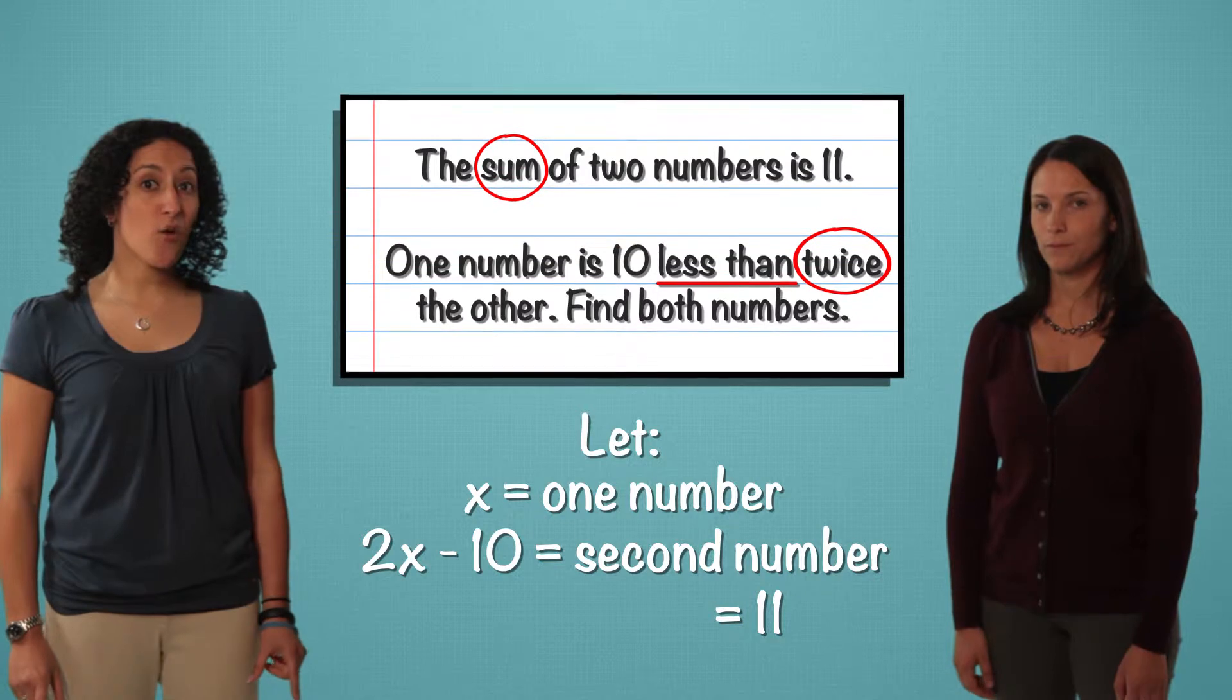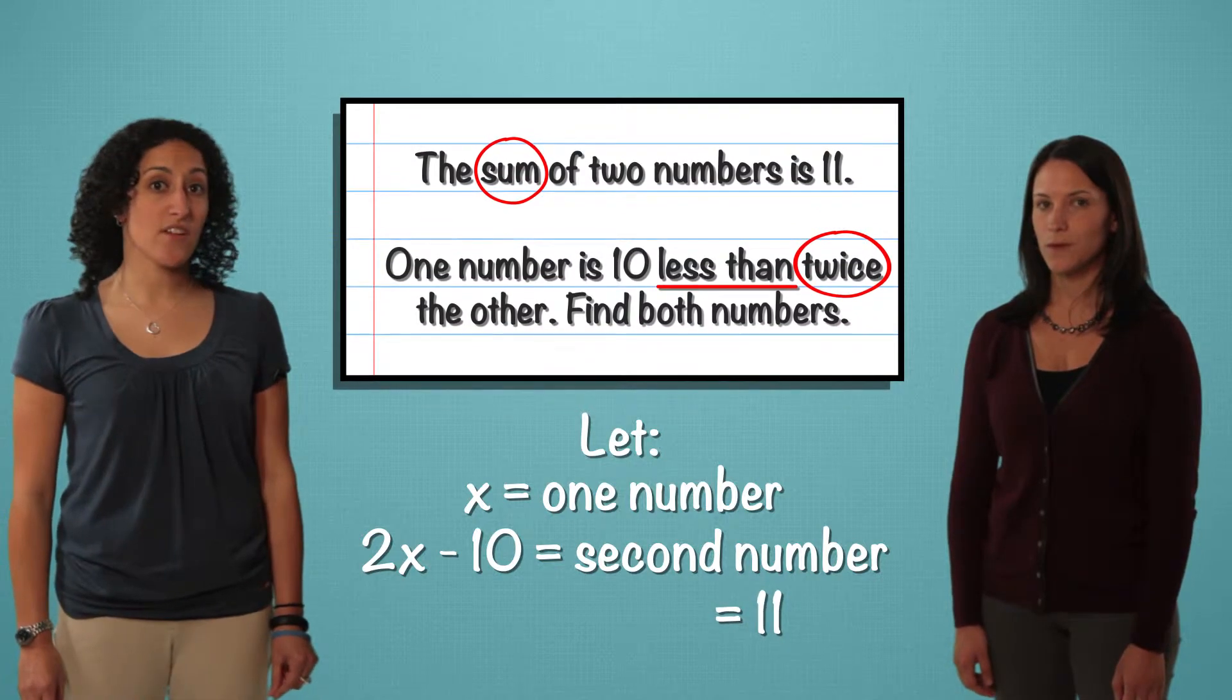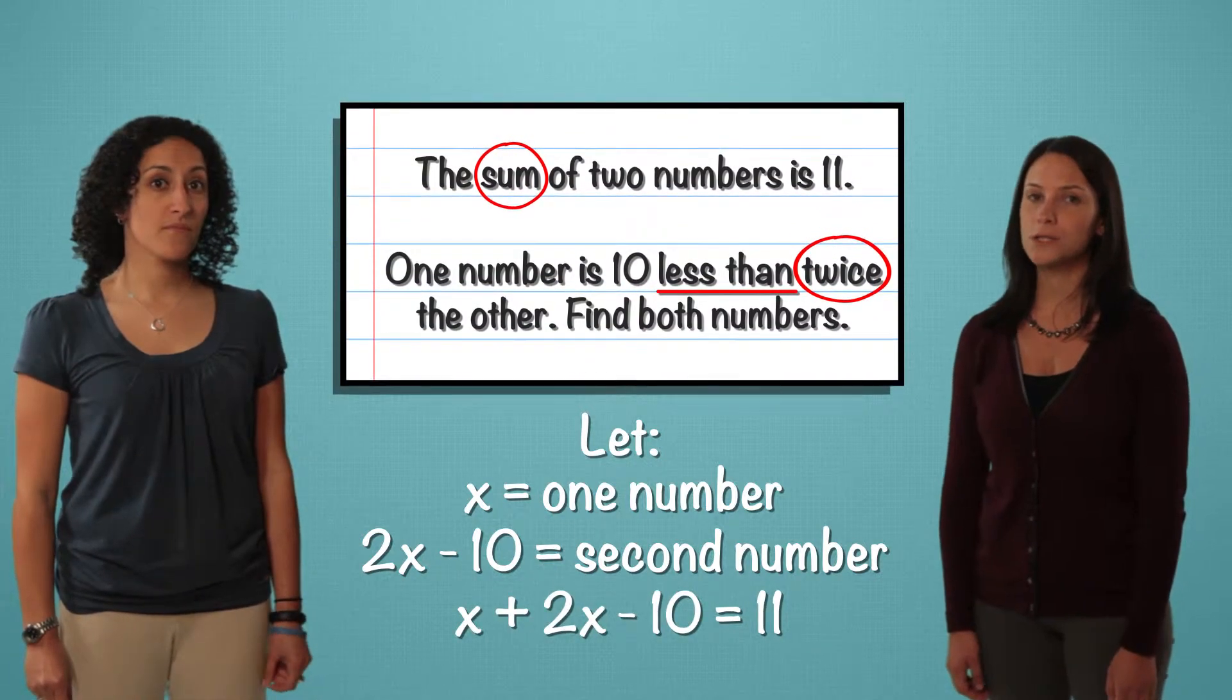Now we write an equation. We know the sum of these two numbers equals 11. So x plus 2x minus 10 equals 11.